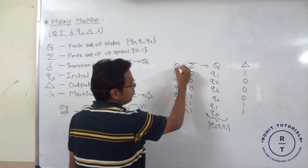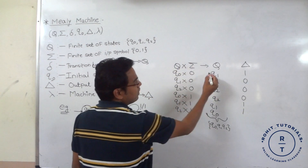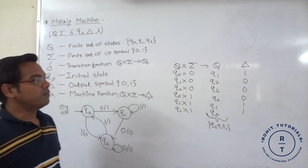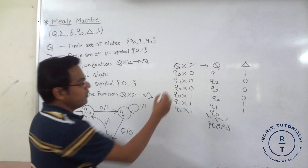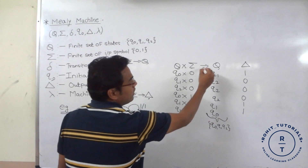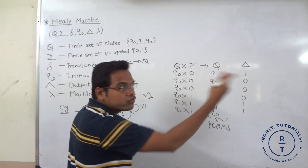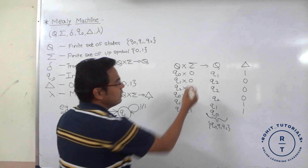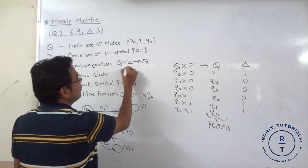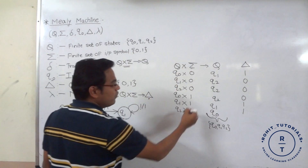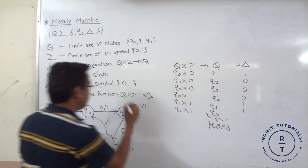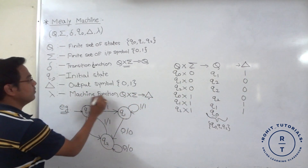Capital Q, for any input symbol that occurs, gives you an output symbol. And capital Q, for any input that occurs, it goes to the next state — this is called the transition function. And with the help of this transition, it gives you the output — this is called the machine function.